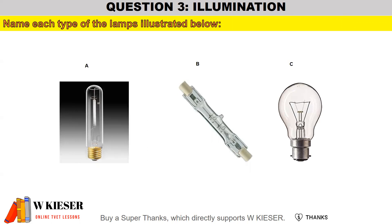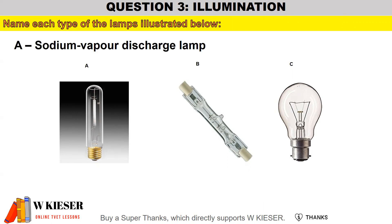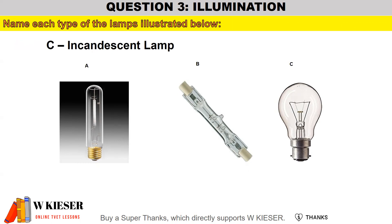Name each type of lamp illustrated below. We have three different types of lamps. Lamp A is a sodium vapor discharge lamp, lamp B is a halogen lamp, and lamp C is an incandescent lamp.